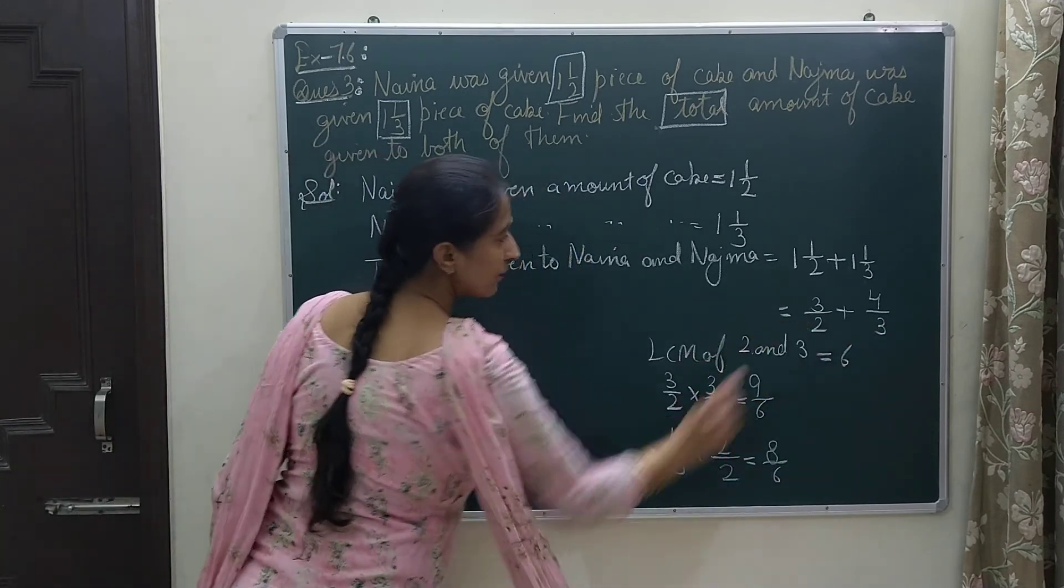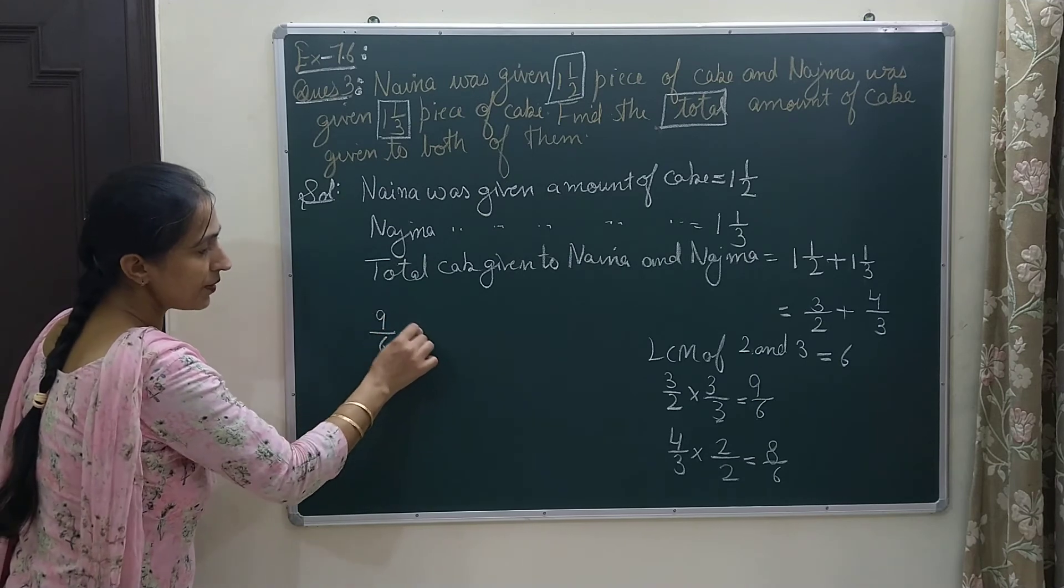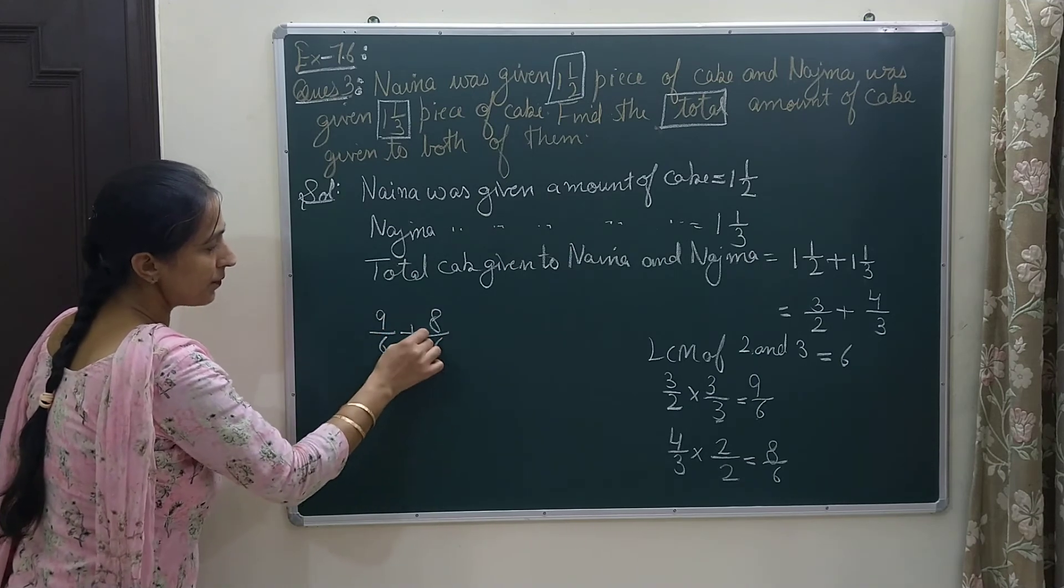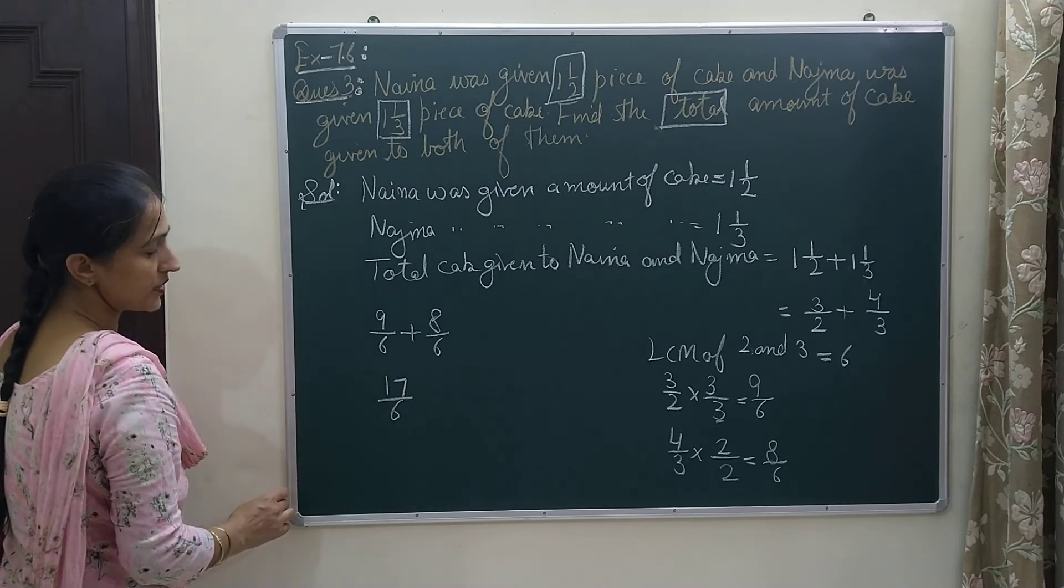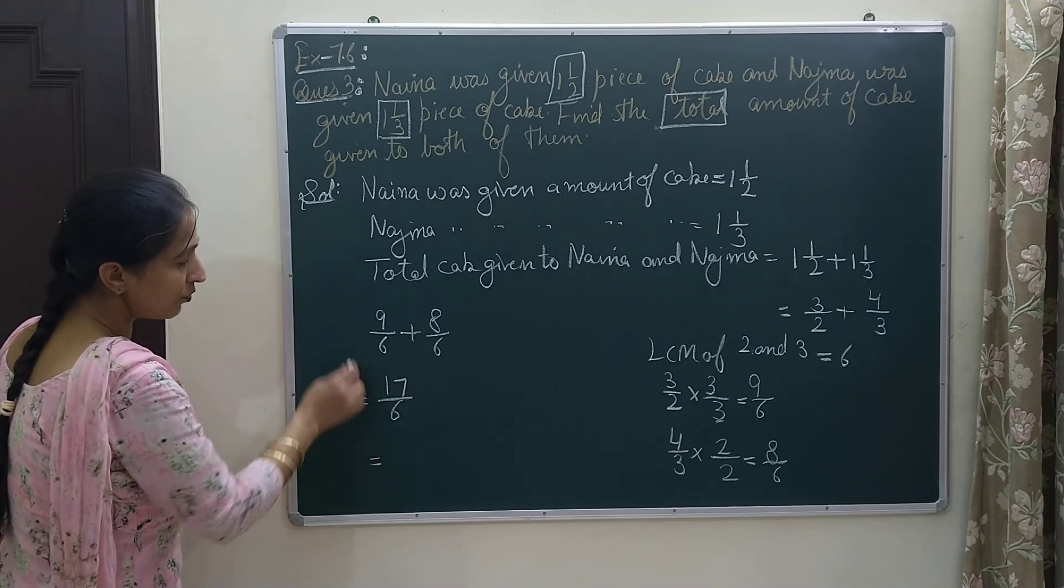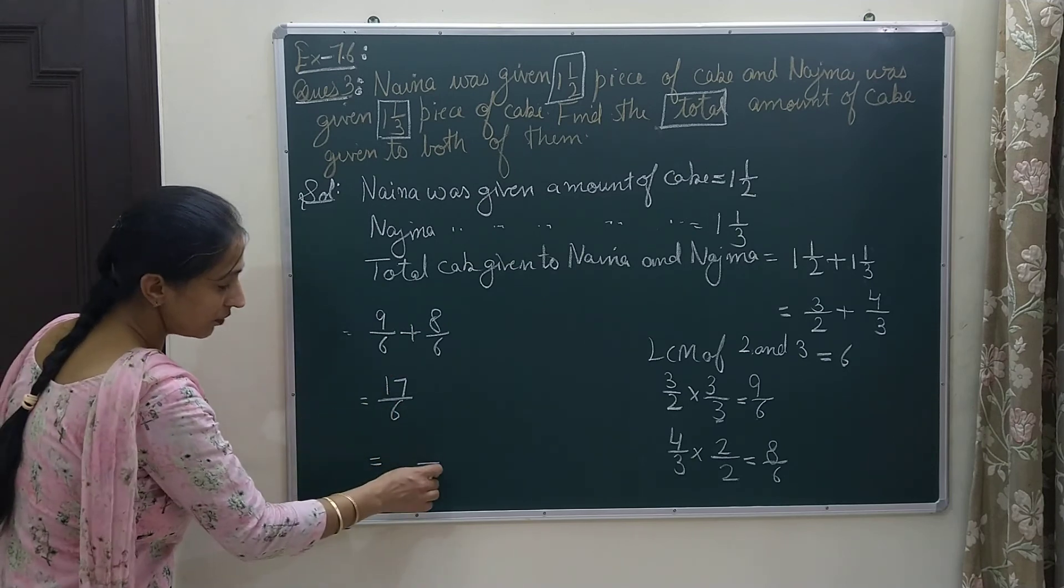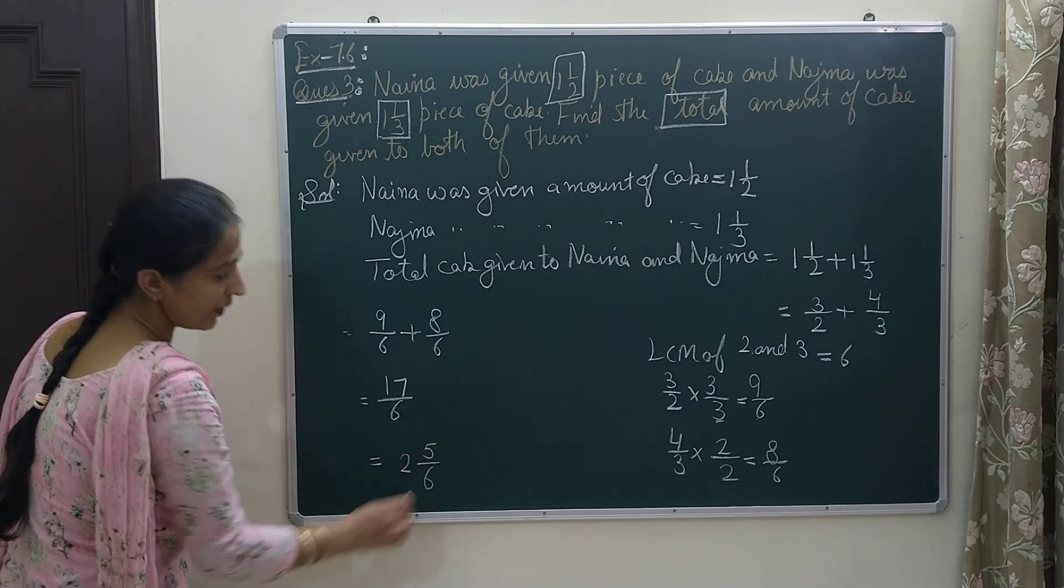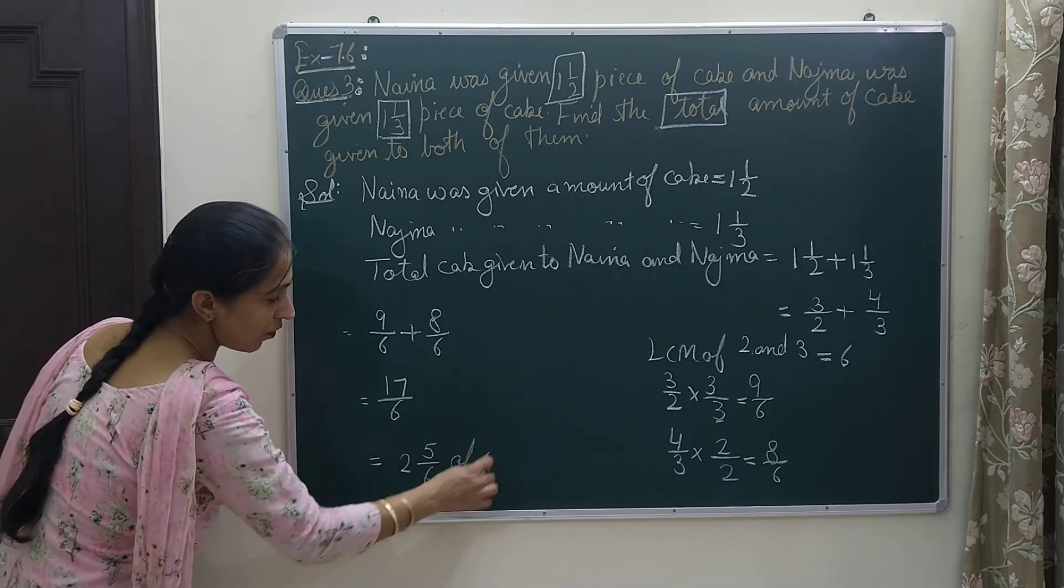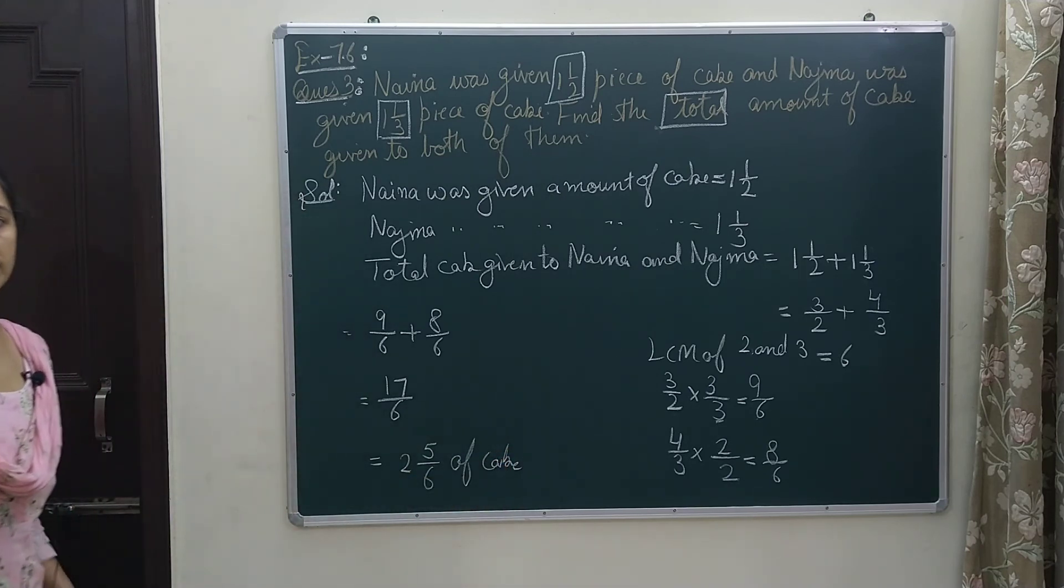Now I have to apply the given operation of addition. So I will write 9/6 plus 8/6 and when I add I get 17/6. And I have told you that you will not leave the answer in the improper one. So I will convert this into mixed fraction and that will be 2 and 5/6. So this much of cake was given in total to both of girls. Thank you.